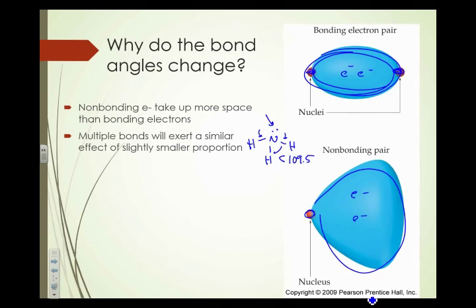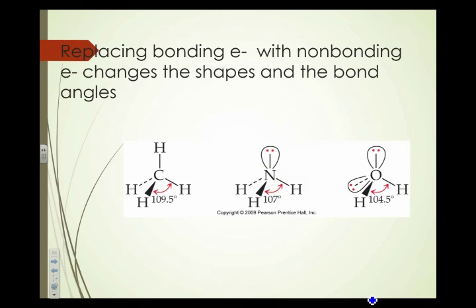If I have a multiple bond, that's going to exert a similar effect, but not quite as large of a proportion. So here's CH4, tetrahedral, bond angle 109.5. We take one of those H's off, now we're looking at NH3, my bond angle has reduced a little bit down to 107. Take a second of those H's off, we're looking at something like water, and now I'm down to 104.5. So as you replace the bonding electrons with nonbonding electrons, it both changes the shape and it makes your bond angle switch.